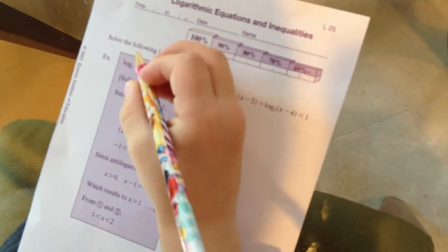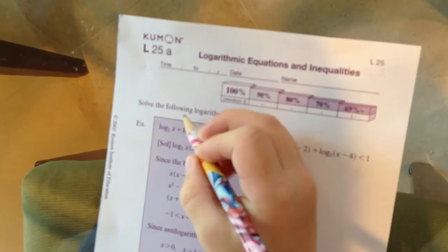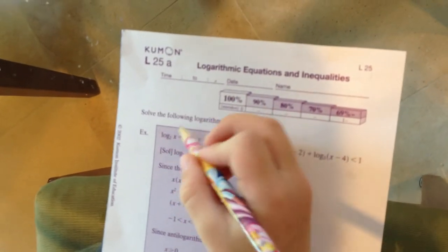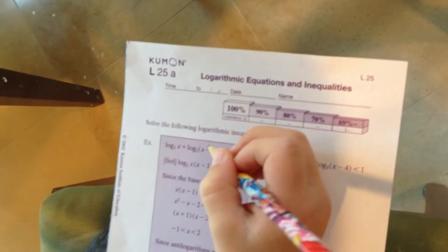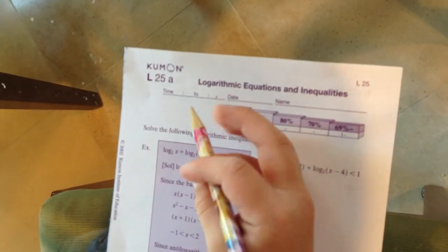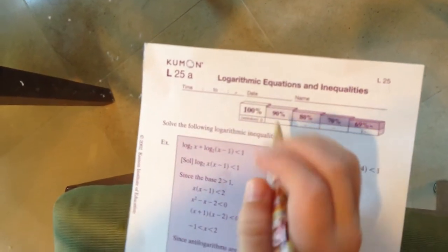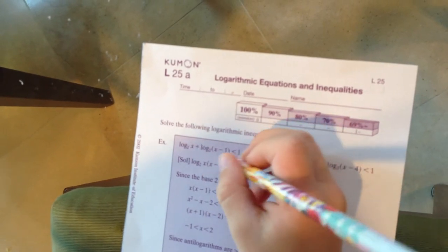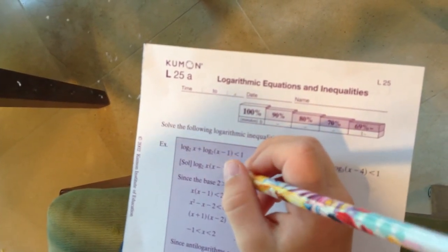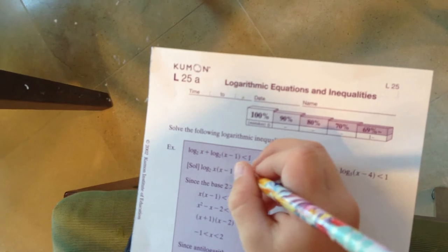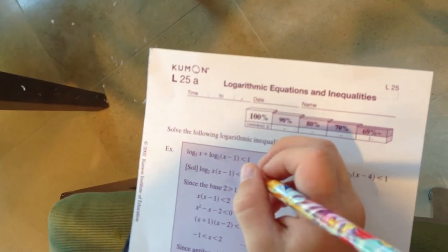Number one, the example. So first, in the example, if you plus them, you times them - you times the antilog of them. So log base 2 of x times (x minus 1) is less than 1. Since the base 2 is greater than 1, the antilog has to be greater than 1. It's just the easy way.